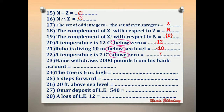Number 23: Hemp withdraws 2,000 pounds from his bank account. We have the word 'withdraw.' Withdraw means negative. So the answer is negative 2,000.